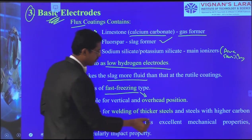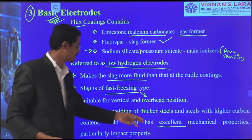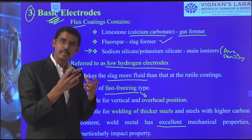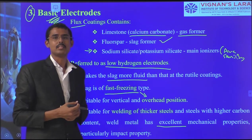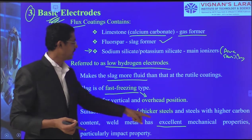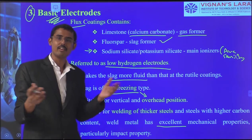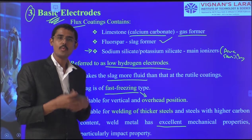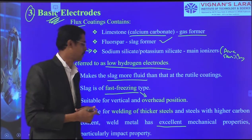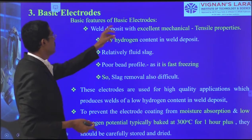Basic electrodes provide excellent mechanical properties because hydrogen is not present — no cracks form, so bonding is good and mechanical properties like strength and toughness are excellent. In cellulose we had reasonably good mechanical properties; in basic electrodes we get excellent mechanical properties. Basic electrodes can be used for all welding positions and provide excellent mechanical properties including tensile strength and toughness. Low hydrogen content is maintained in the weld. The slag is relatively fluid with a poor bead profile — as it is fast freezing, melting is good due to arc stability, material is deposited fast and immediately solidified, so the bead profile is not as perfect. Slag removal is also difficult because of immediate freezing.